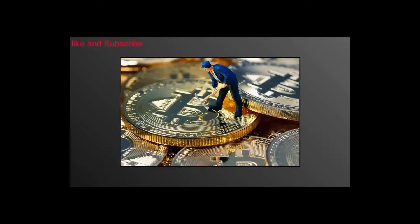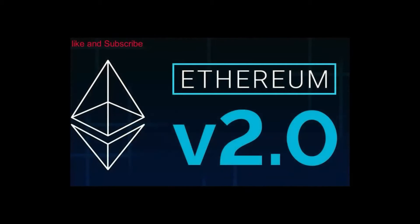Blockchain is a system of recording information in a way that makes it difficult or impossible to change, hack, or cheat the system. A blockchain is essentially a digital ledger of transactions that is duplicated and distributed across a collection of computers on the blockchain — basically a network of computers called nodes, which all have the same history of transactions, so instead of one company or database holding all the information, it's spread across a whole bunch of networks.